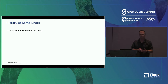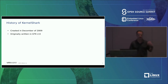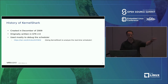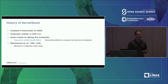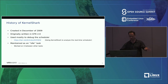I want to go back on a little history of KernelShark. It was created in December of 2009 — so it's over a decade old, almost 12 years now. It was originally written in GTK version 2, and it was mostly used to debug the scheduler. There's a nice article I wrote on LWN using KernelShark to analyze the real-time scheduler. The problem was it was maintained as an idle task — meaning I was never told to work on it, so I only worked on it when I had nothing else to do.